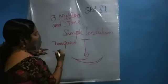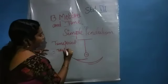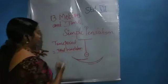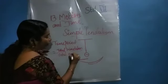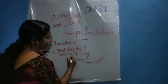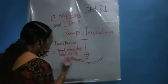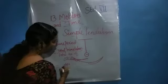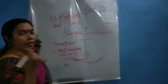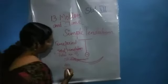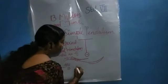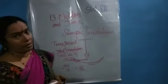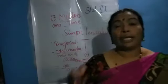Time period equals total time taken divided by total number of oscillations. For example, if the total time taken is 40 seconds for 10 oscillations, then 40 divided by 10 equals 4 seconds. So the time taken for one oscillation is 4 seconds. Like this, we can find out and measure the time.